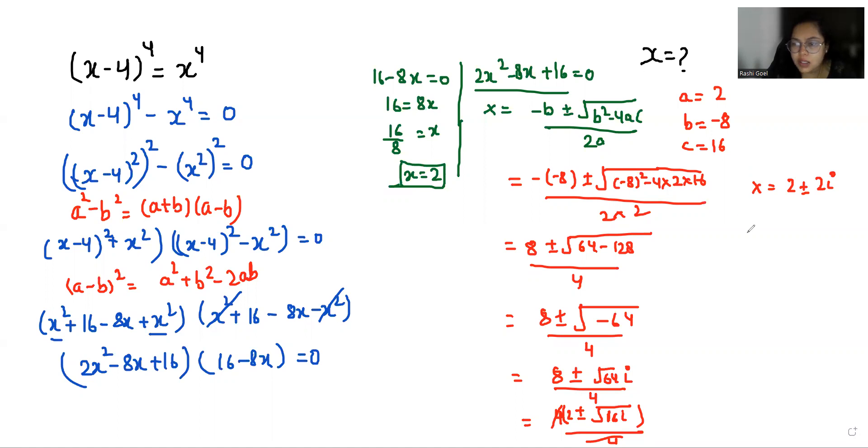So we have three values of x: either x = 2, or x = 2 - 2i, or x = 2 + 2i.